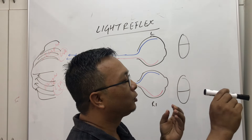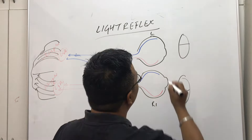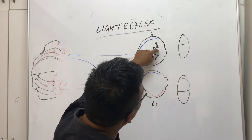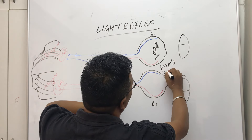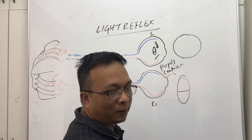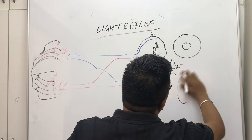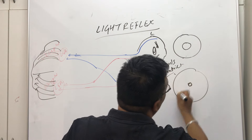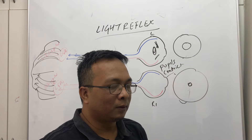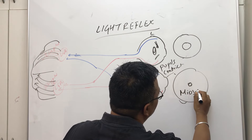Light reflex means if I throw light on one eye — take a torch and put light on it — what will be the reaction? The reaction is that your iris is here, this part is called the pupil. What will happen is the pupils constrict. Whenever we throw light, pupils constrict. This is because of parasympathetic innervation — the parasympathetic nerves make our pupils small. This is called miosis: constriction of the pupil.